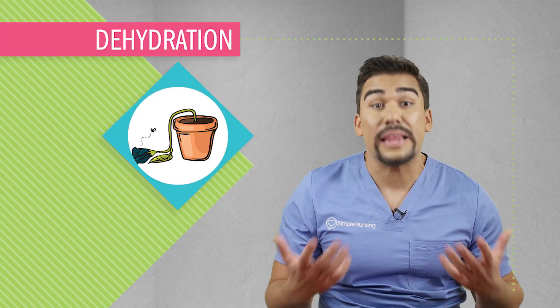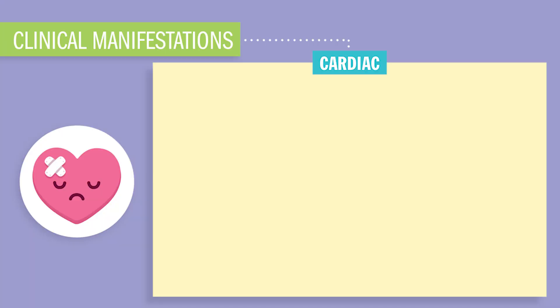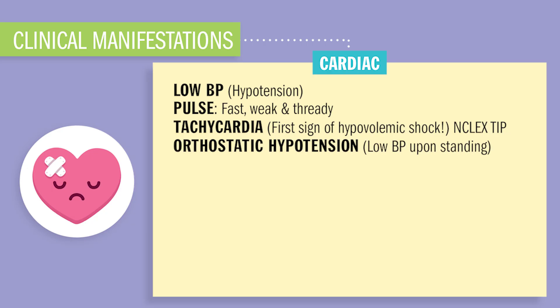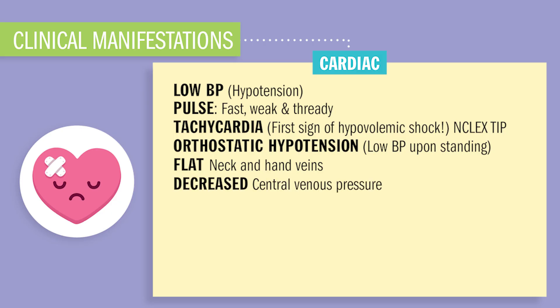So how will your patients present with all these low fluids? They're going to look dried up and flat. For the cardiac system, you'll have low blood pressure called hypotension, weak thready pulses, and increased pulse rate called tachycardia — usually the first sign of hypovolemic shock. You'll also see decreased blood pressure, orthostatic hypotension, flat neck and hand veins, decreased central venous pressures, and dysrhythmias from thick electrolyte concentration. Often we see hyperkalemia — that high potassium — from hemoconcentration.